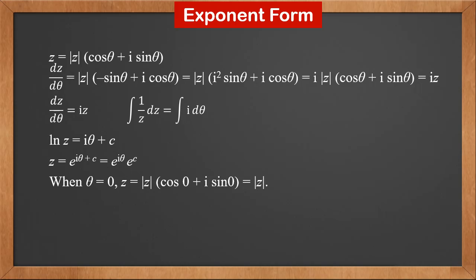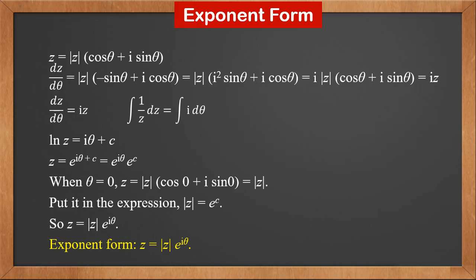For the initial condition, we put theta equals zero in the polar form. Then z equals z's modulus times cosine zero plus i sine zero, which is z's modulus. Putting this in the general solution, we get z's modulus equals e to c. Therefore z is z's modulus times e to i theta. This is the exponential form of a complex number, equivalent to the polar form. Both use the modulus and argument to express a complex number.